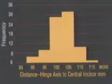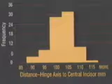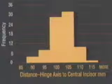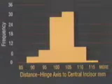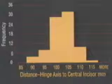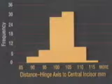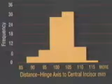Research I have recently completed using males and females of different ethnicity indicates a hinge axis to maxillary incisal distance averaging 100.21 mm. 85% of this patient population encompass a range within 5 mm above or below this average axis.